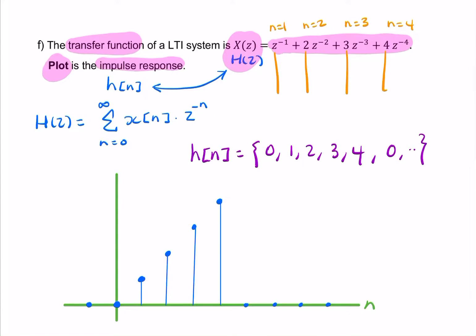So that's n equals minus 1, 0, 1, 2, 3, 4, 5, 6, 7, 8.